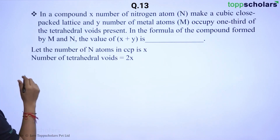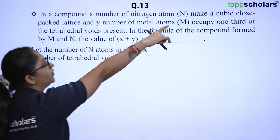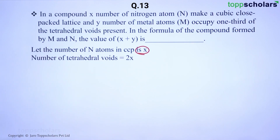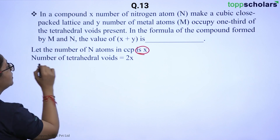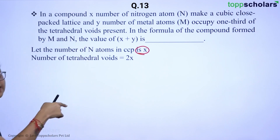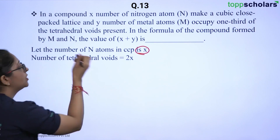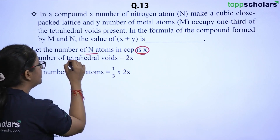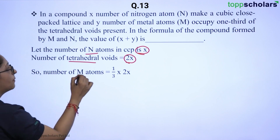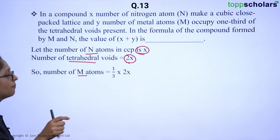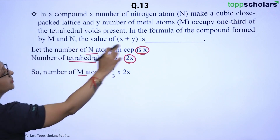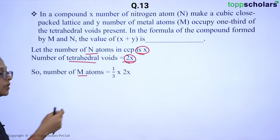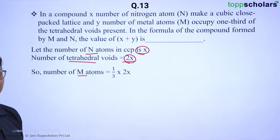First we take the number of nitrogen atoms for CCP as X. From that we can say that the number of tetrahedral voids present will be twice X, that is 2X, because the number of nitrogen atoms is X. The number of M atoms (metal atoms) present in the compound will be one-third of the tetrahedral voids, which is one-third of 2X.